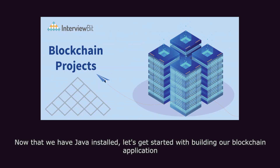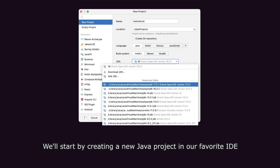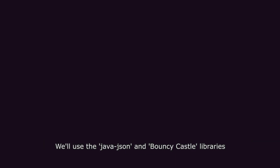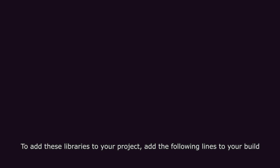Now that we have Java installed, let's get started with building our blockchain application. We'll start by creating a new Java project in our favorite IDE. Next, we'll need to add some dependencies to our project to help us build our blockchain. We'll use the Jackson and Bouncy Castle libraries — add these libraries to your project at the following lines.